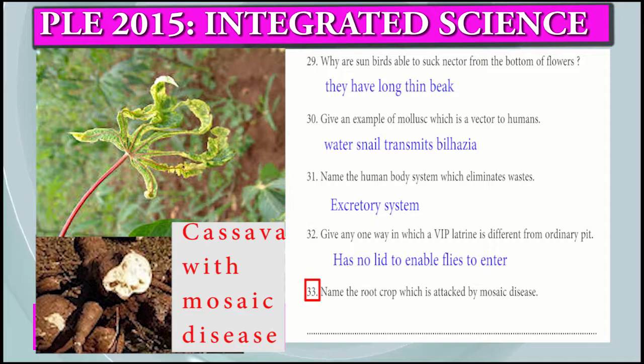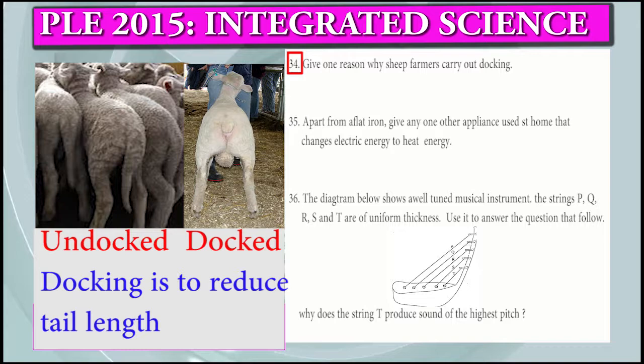Question 33: Name the root crop which is attacked by mosaic disease. That is cassava.